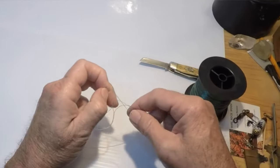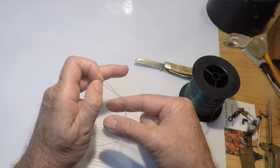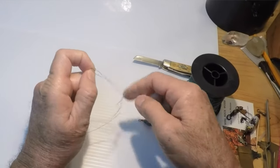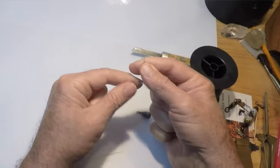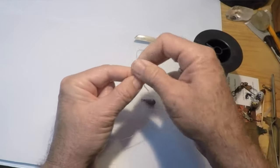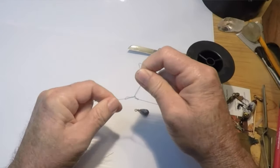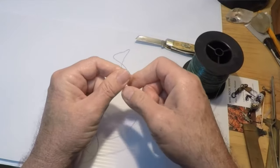Now you're just going to pull the bottom of your loop through the hole. Tighten it up and you can already see the rig.